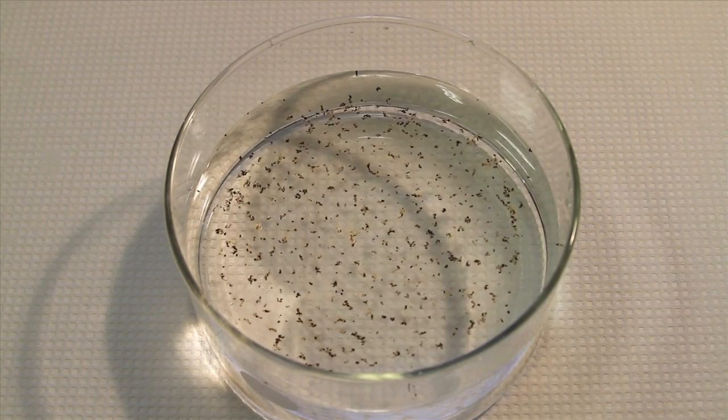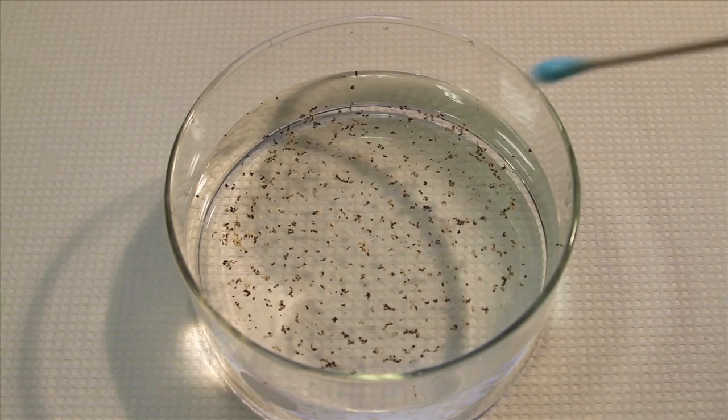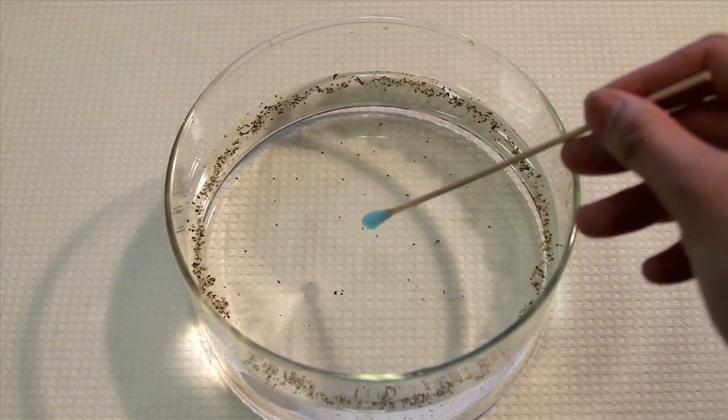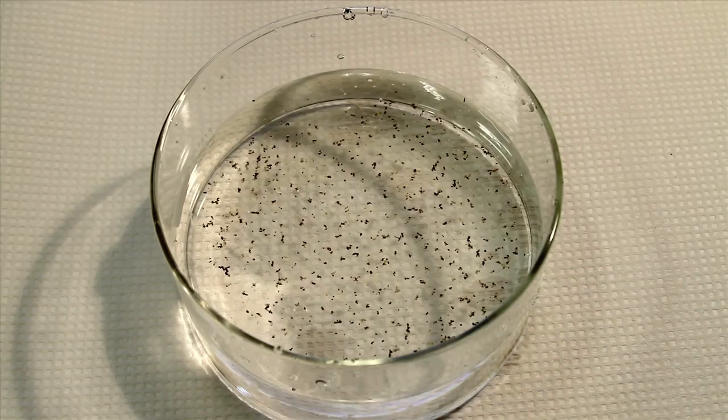We can see an example of the Marangoni effect by adding pepper to water. There's soap on the end of this cotton swab. Watch what happens when the cotton swab is put into the water. The pepper flakes move away from the point where we added the soap.